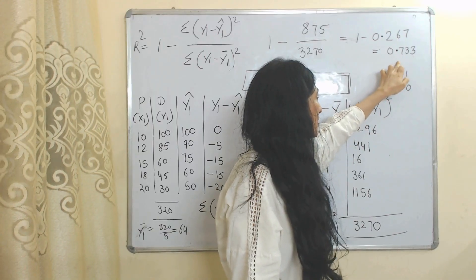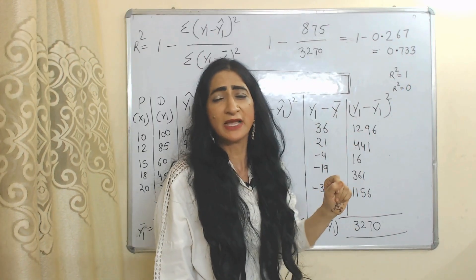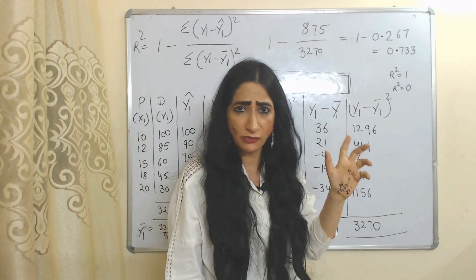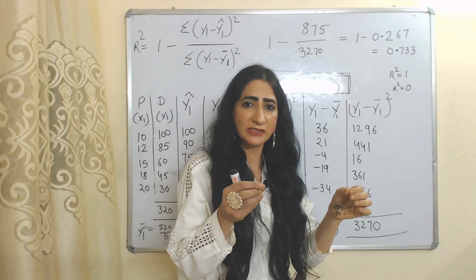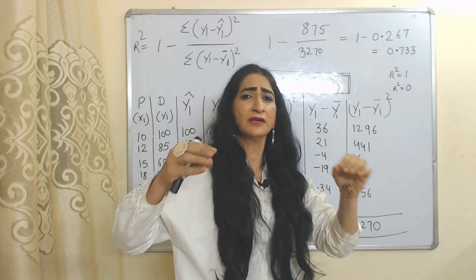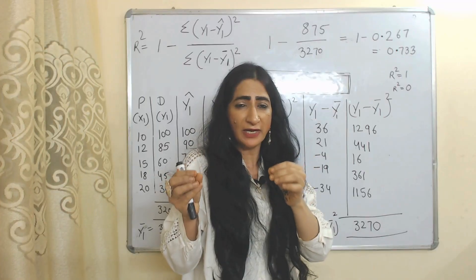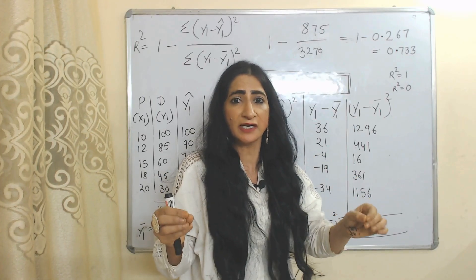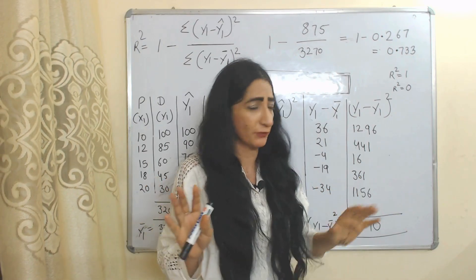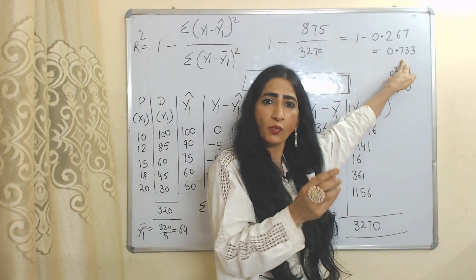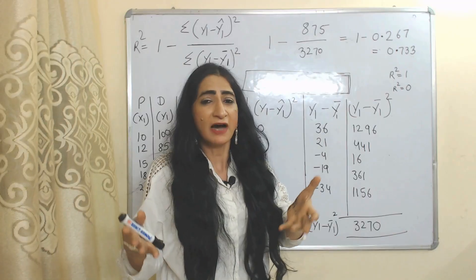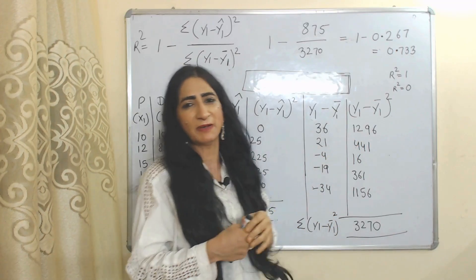Here you can see 0.733 is much closer to 1 than to 0. As we discussed earlier, the value of R-squared lies between 0 and 1. A value closer to 1 means the independent variable is very powerful and is able to explain the variance in the dependent variable well. So our independent variable has enough power to predict our dependent variable.